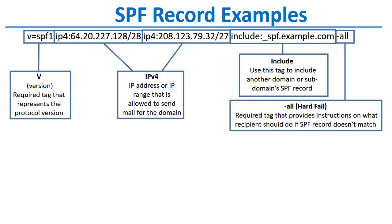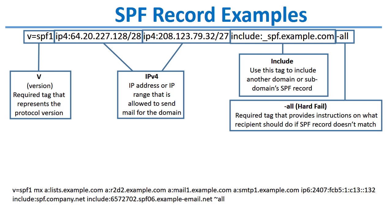If you wanted to include all mail servers specified for spf.example.com as authorized senders for your domain, you would use the include tag. There is also the all tag at the end of the SPF record, which can indicate a hard fail or a soft fail. When a dash or minus sign is used in front of 'all', any senders not listed in the SPF record are treated as a hard fail and should be blocked.